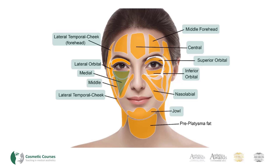Jowl fat has an inferior and a superior compartment. The superior compartment is inferior to the nasolabial fat and adheres to the depressor anguli oris muscle. The inferior compartment is below this and fuses with the pre-platysma fat.